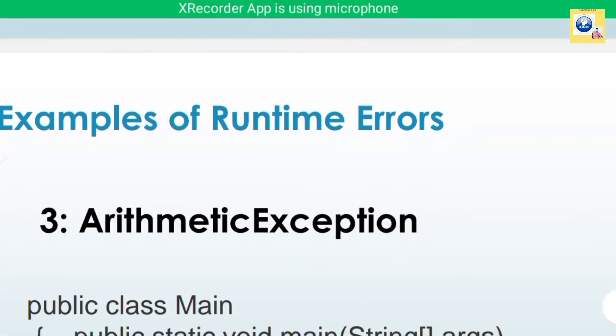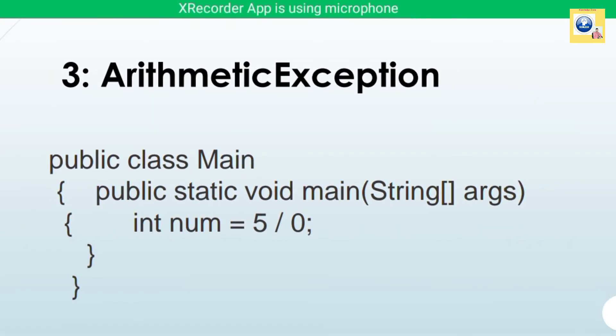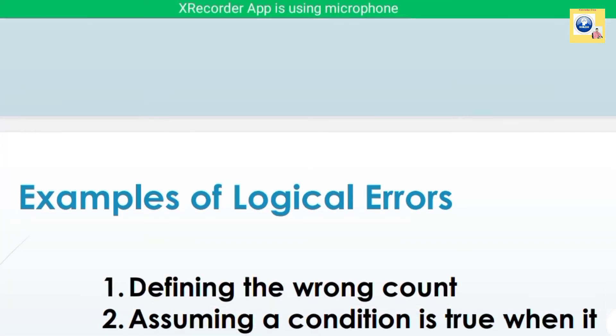Another example is an ArithmeticException — division by zero. When you divide a numeric value by zero it generates a runtime error. This is a very common example.